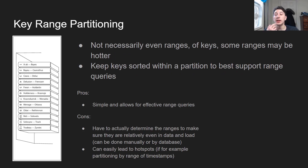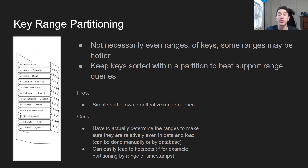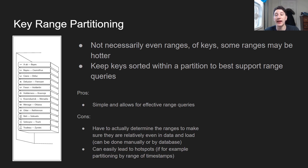First let's talk about key range partitioning. As you can see on the left here, all that really is, is saying we're going to take a bunch of keys, divide them into ranges, and assign a partition to each range. The ranges are not necessarily even, because obviously we don't want hotspots — if there are certain keys that have a lot more rows corresponding to that range, then we want to be able to split that one into even smaller chunks. Generally within each partition we're keeping the keys sorted to best support range queries. The biggest pro is that it's very simple and allows for effective range queries. The biggest con is that it easily leads to hotspots, because it's kind of hard to just look at a range of keys and know exactly the query patterns and balances that are going to happen at each range.